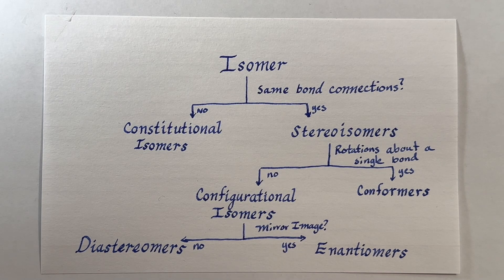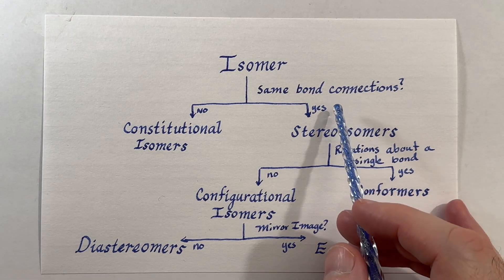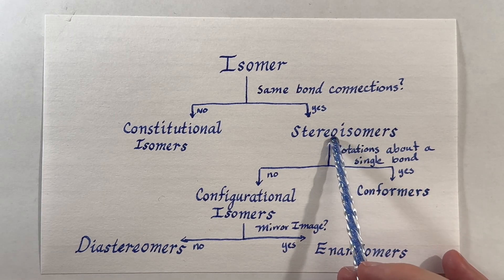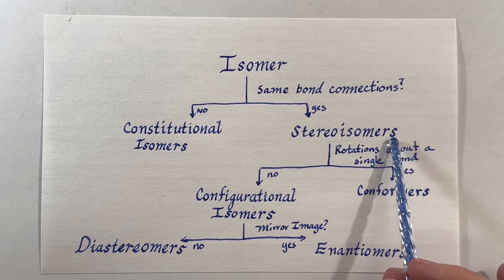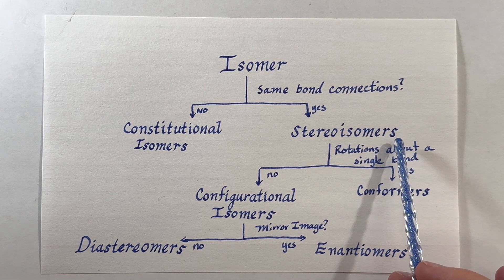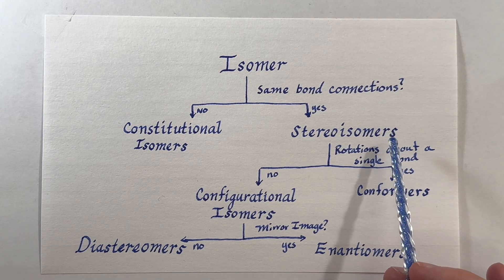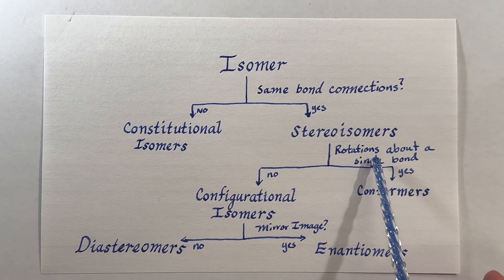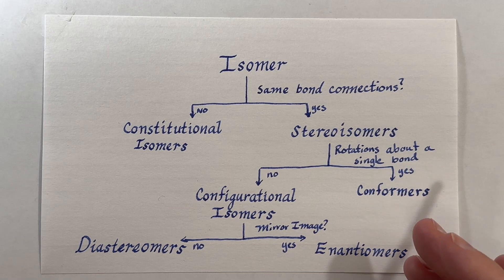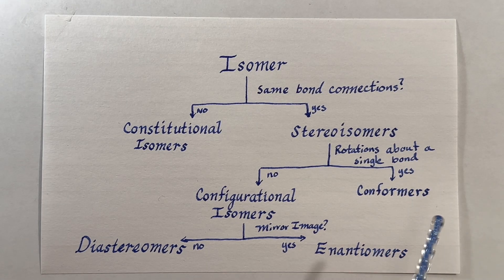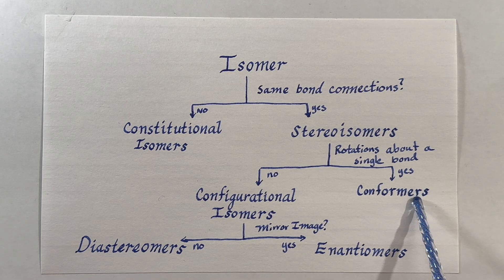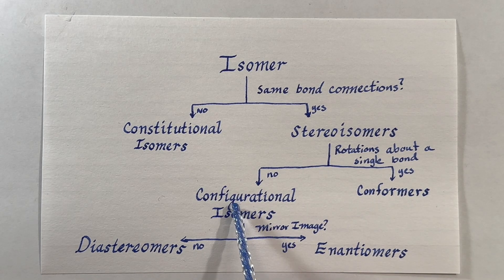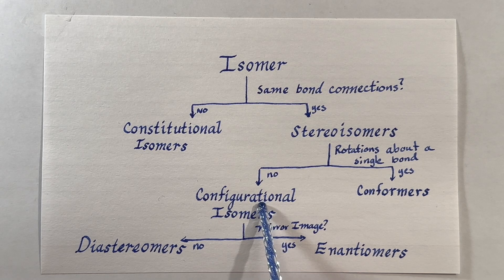Cyclobutane and butene have the same chemical formula but different bond connections. Now if they do have the same bond connections, they're classified into a broad category called stereo isomers. From here we can ask: are the rotations about a single bond what's causing the isomer? If so, those are conformers.